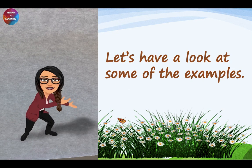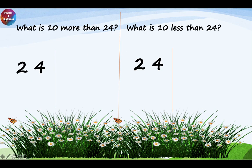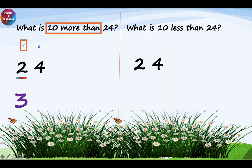Let's have a look at some examples to understand this lesson. What is 10 more than 24? First, you have to write 1's and 10's. The sum says 10 more than, which means we are going to add to the 10's place. What is under the 10's place? It's number 2. So you are going to increase the value of 2 — it will become 3. And we are not going to change the value of 1's. It will remain the same, so it's going to be 4.